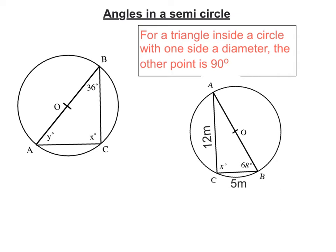In this video, we're going to look at angles in a semicircle. What does that mean? Well, as it says in this box here, for a triangle inside a circle with one side a diameter, the other point is 90 degrees.